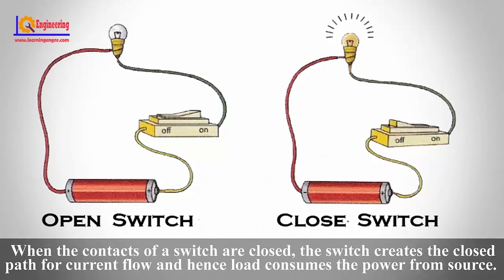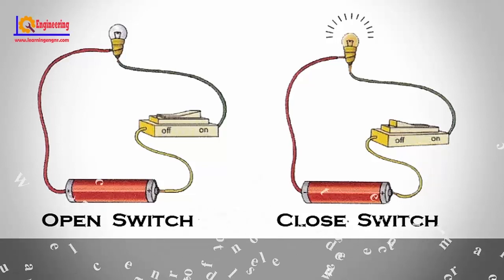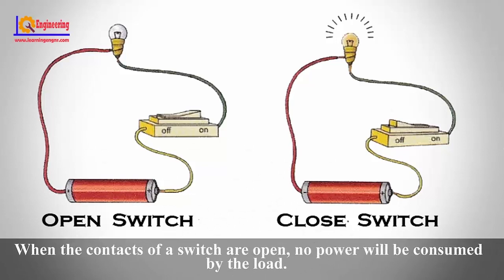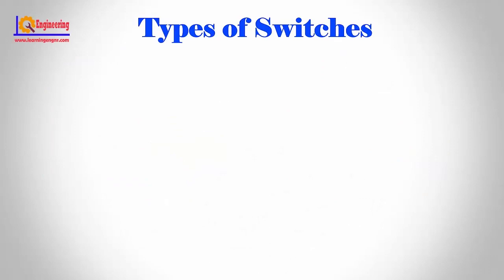When the contacts of a switch are closed, the switch creates the closed path for current flow and hence loads consume the power from source. When the contacts of a switch are open, no power will be consumed by the load. There are mainly two types of switches.